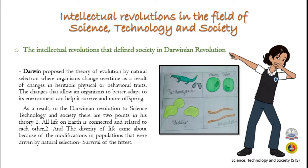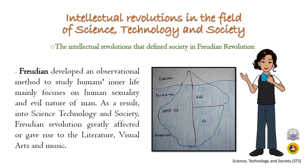The third intellectual revolution is the Freudian Revolution. Freud founded psychoanalysis and described how the brain can be segmented into compartments. He developed an observational method to study human inner life, mainly focusing on human sexuality and the nature of man. The Freudian revolution greatly affected literature, visual art, and music. His theory is illustrated by the concepts of the ego, id, superego, and the conscious, preconscious, and unconscious.